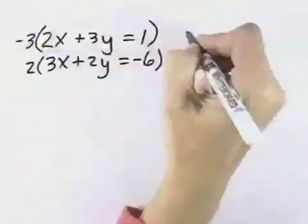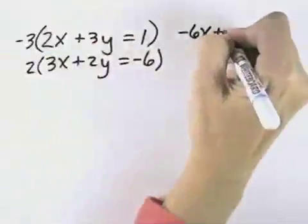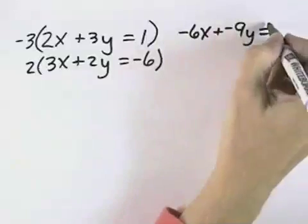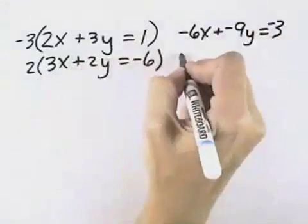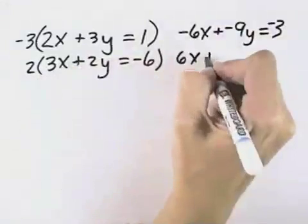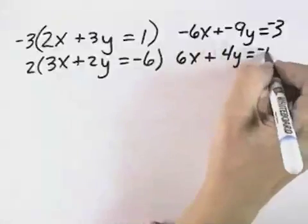That will give me negative 3 times 2x is negative 6x, negative 3 times 3y is negative 9y, and negative 3 times 1 is negative 3. 2 times 3x in my second equation is 6x, plus 2 times y is 4y equals 2 times negative 6, which is negative 12.